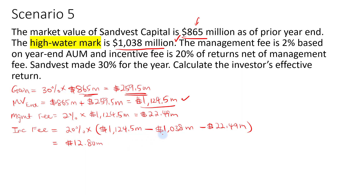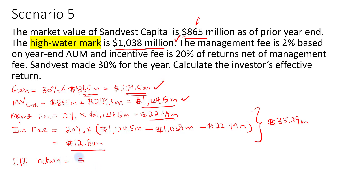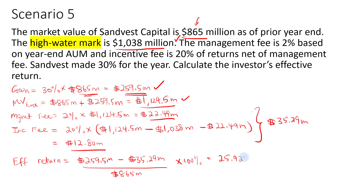The total fees are $22.49 million plus $12.8 million, equaling $35.29 million. The effective return for the year is $259.5 million minus total fees of $35.29 million, divided by the beginning market value of $865 million times 100%, giving us 25.92%. Take note that the high watermark is only factored in when computing the incentive fee, not when calculating the effective return.